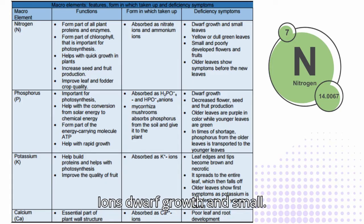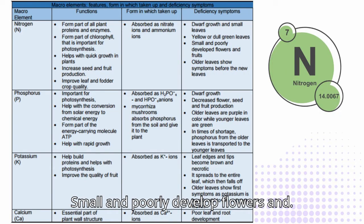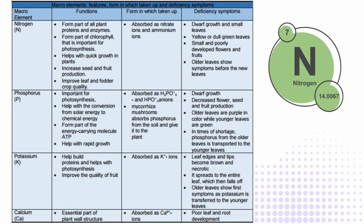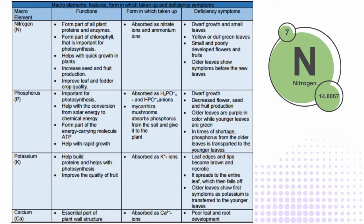Nitrogen deficiency symptoms: Dwarf growth and small leaves, yellow or dull green leaves, small and poorly developed flowers and fruits. Older leaves show symptoms before the new leaves.